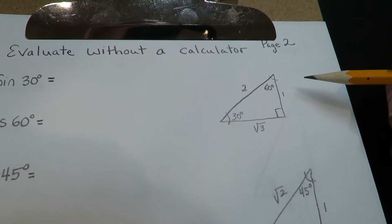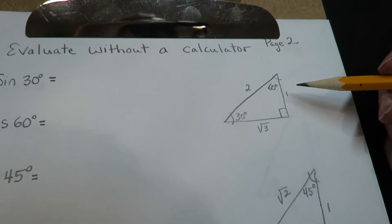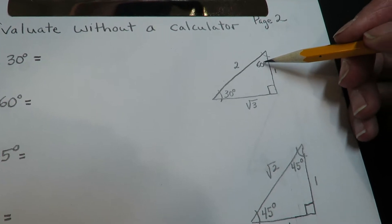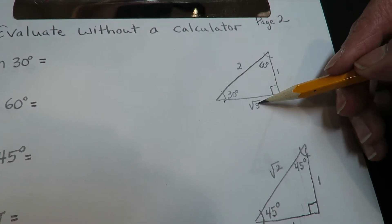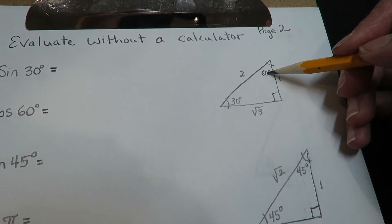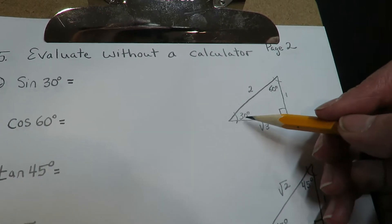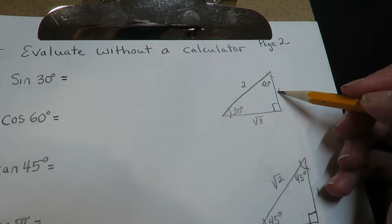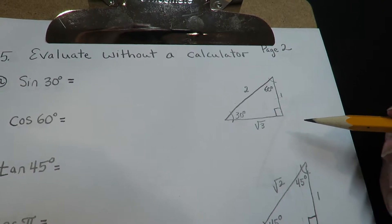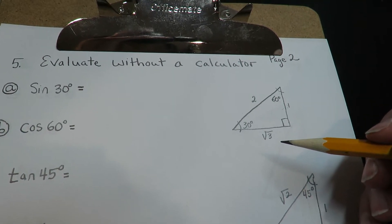The other thing you have to be really careful about when you are evaluating angles is that the opposite and the adjacent side change depending on where you're standing at the triangle. If I'm at 60 degrees, radical three is opposite to me and one is adjacent to me. But if I'm at 30 degrees, one would be opposite to me and radical three would be adjacent. The opposite is totally dependent on where you are standing on the triangle.